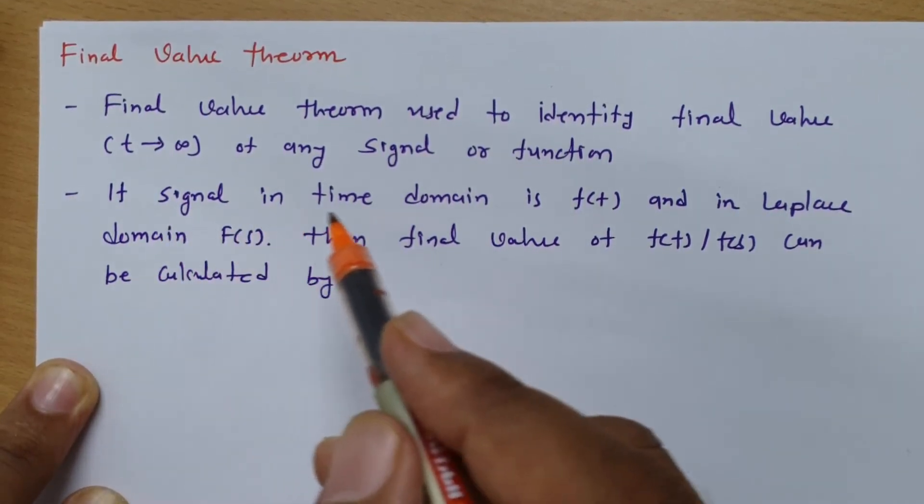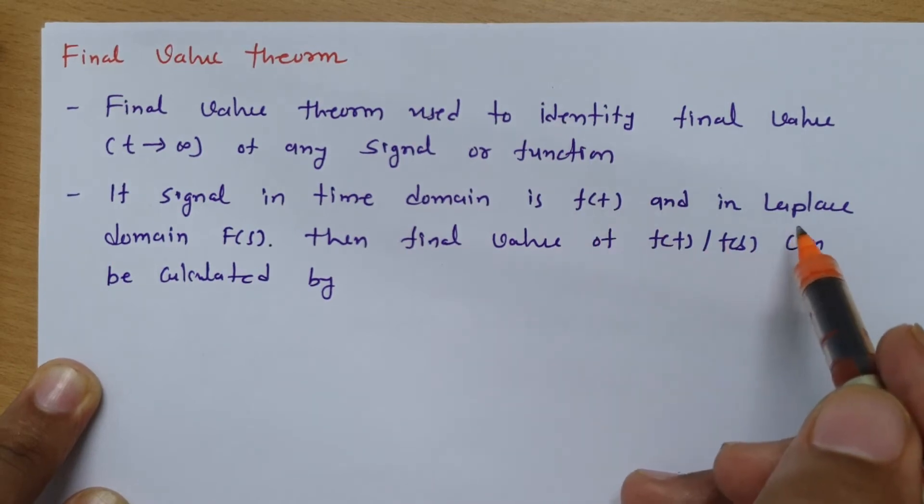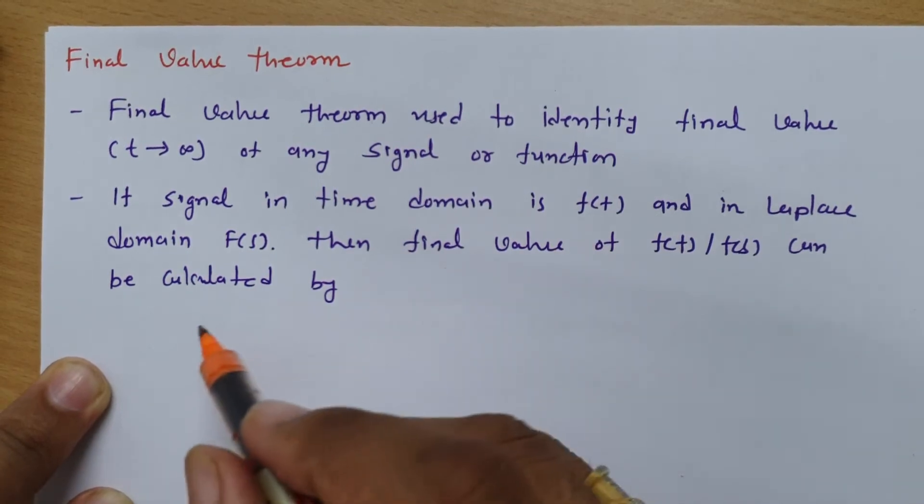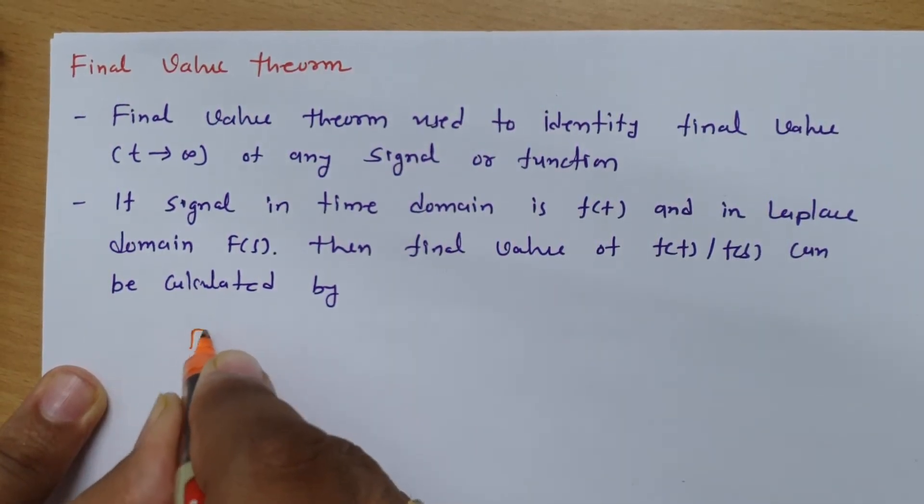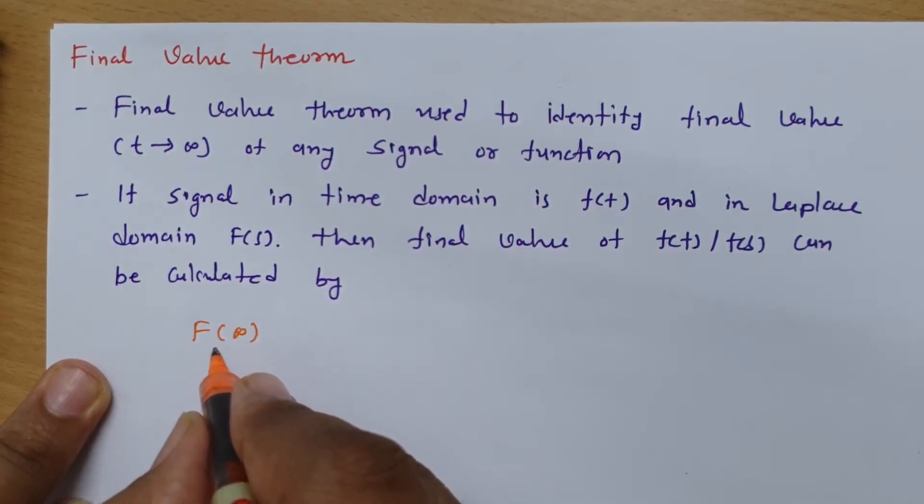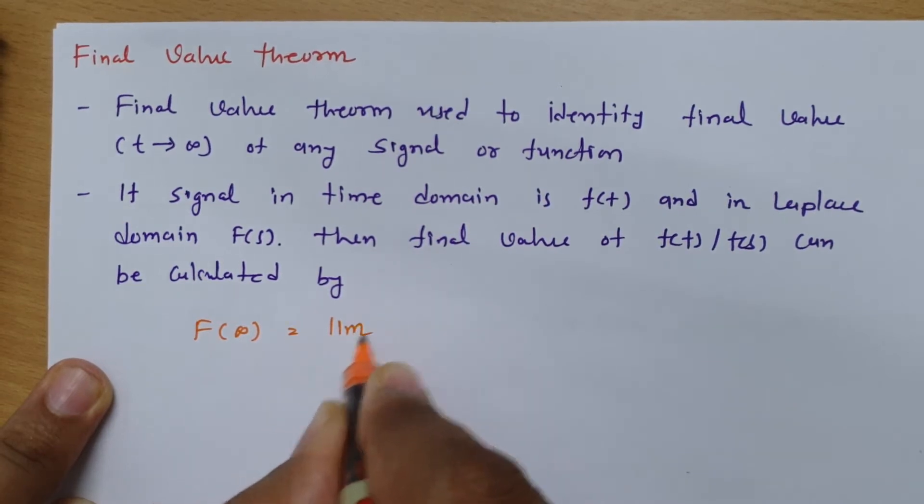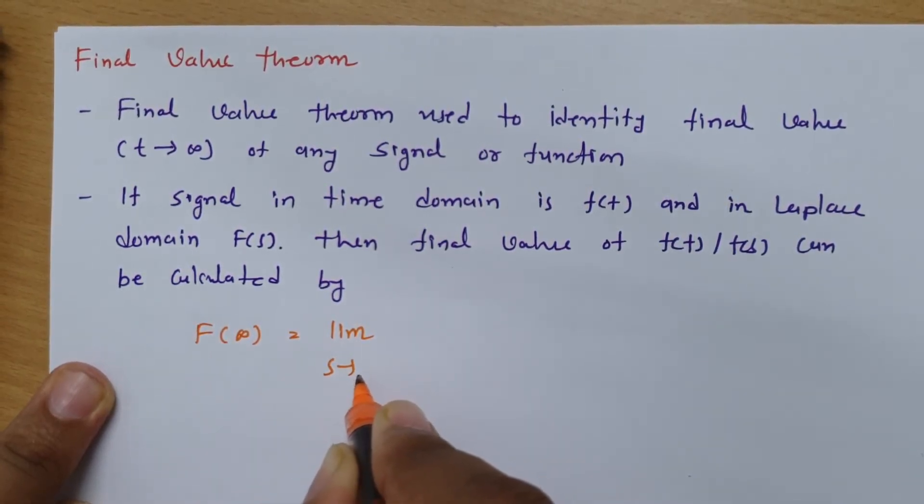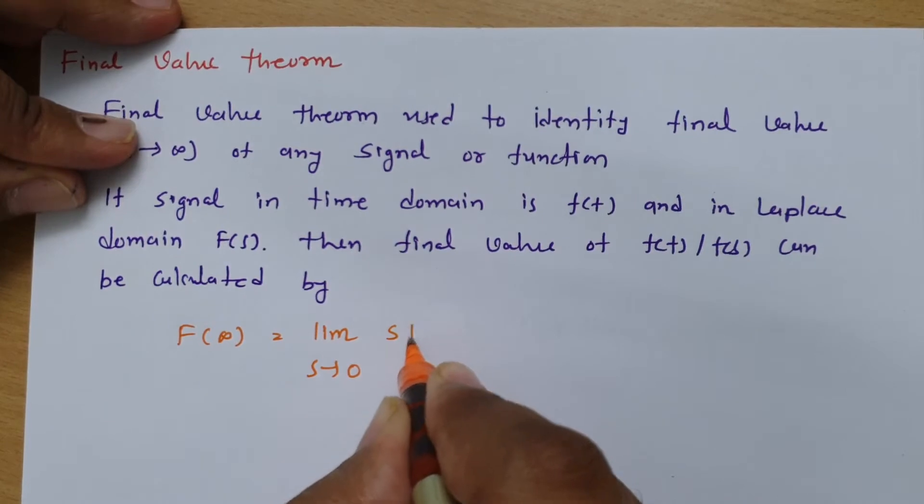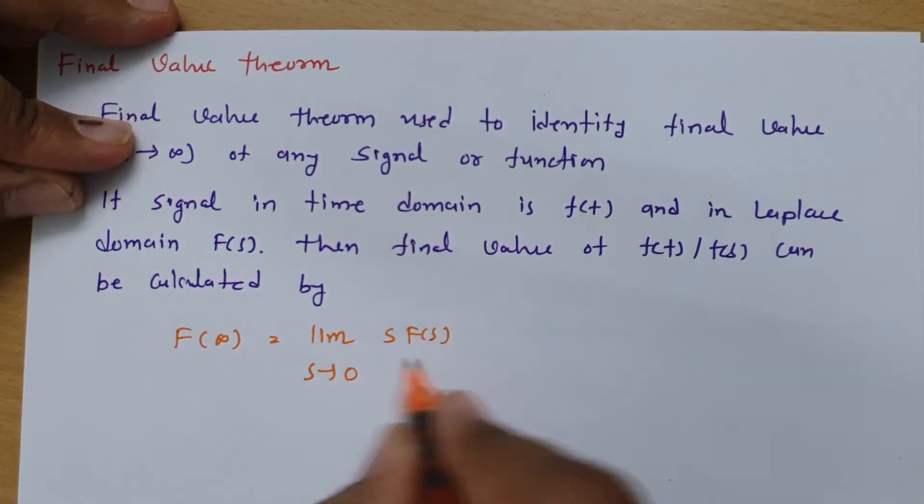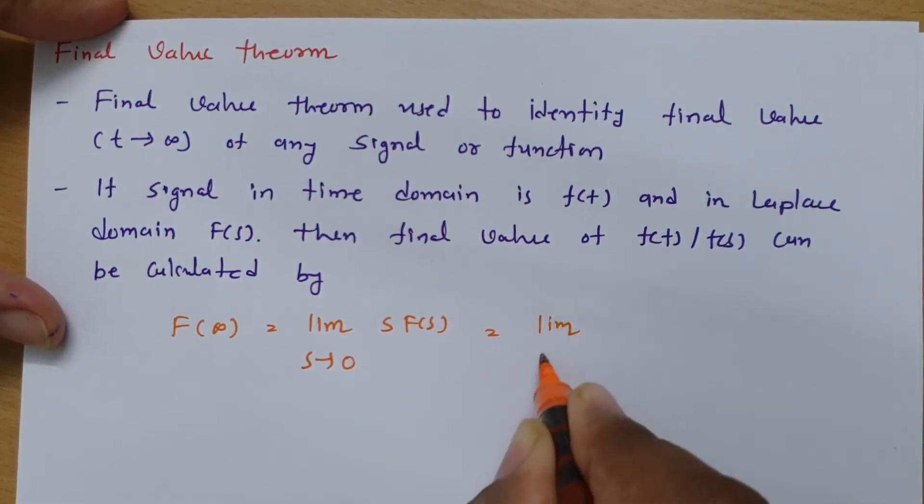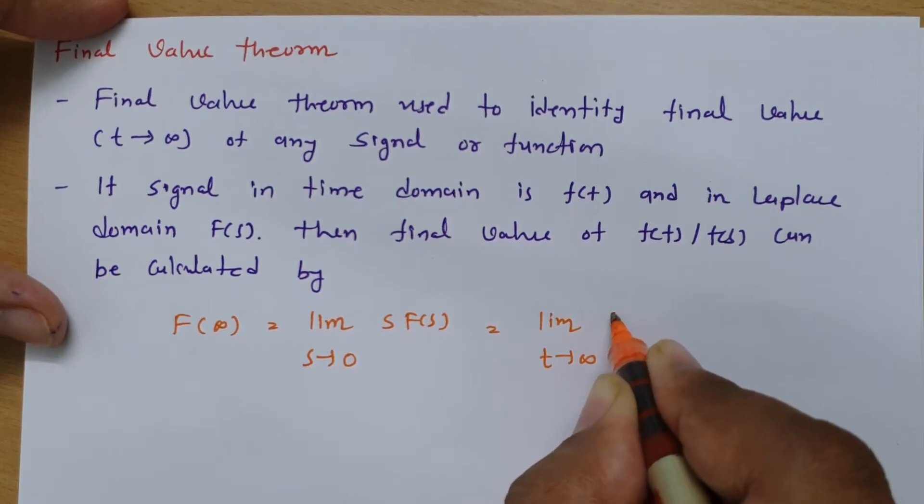If you have a signal in time domain by f(t) and in Laplace domain by F(s), then the final value of f(t) or F(s) can be calculated. At time t equals infinite, the function value in Laplace domain is limit s tends to 0 of s·F(s), and in time domain it's limit t tends to infinite of f(t).